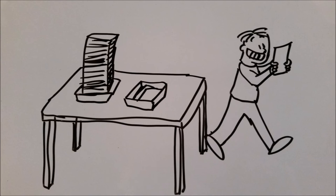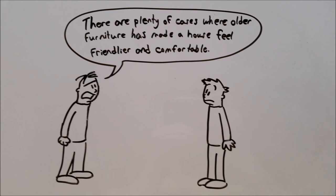This is a fallacy where someone picks out small, individual cases that support their claim, but ignore all others to make their argument seem more valid. If Bernard says, there are plenty of other cases where older furniture has made a house feel friendly or comfortable, not only is he probably making that point up, but he's choosing to focus on one point and ignore any others that might make his argument less valid.